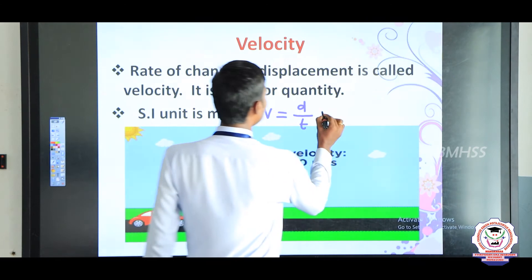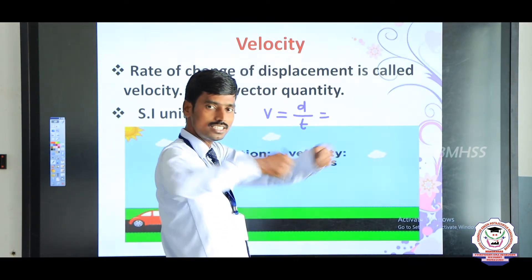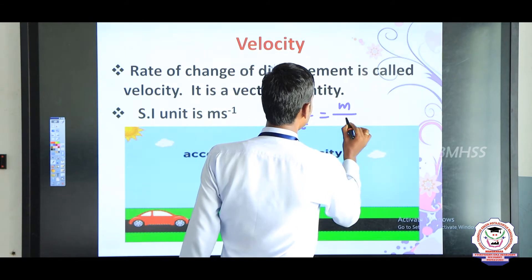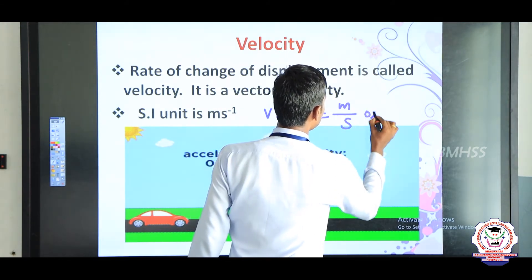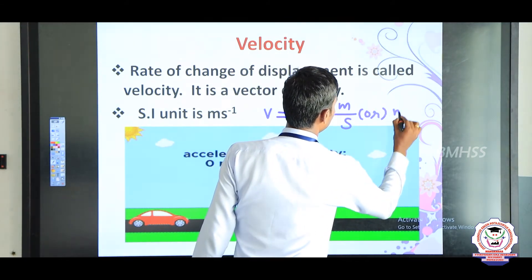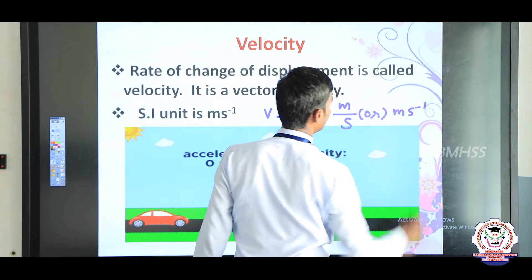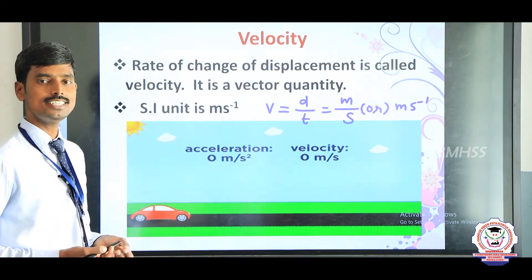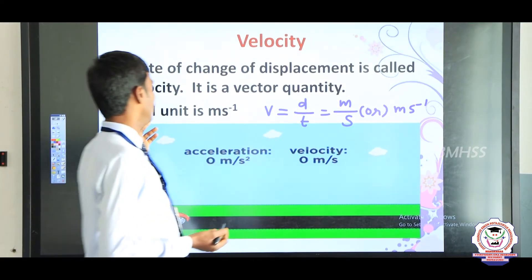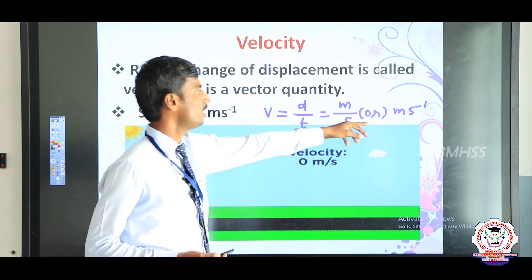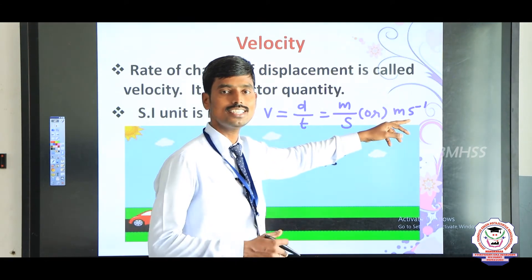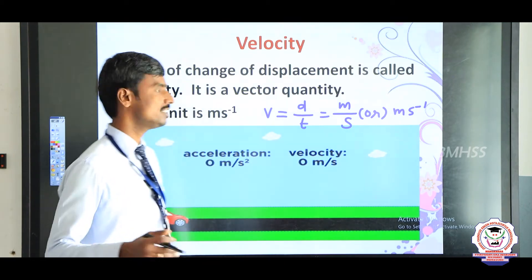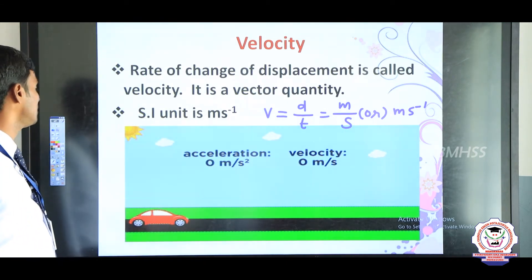To measure distance, we use a meter scale. The SI unit of velocity is meter divided by seconds, which is meter second power minus 1 (m s⁻¹). In the CGS system, the unit of velocity is centimeter per second.